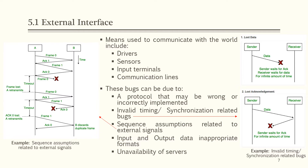External interfaces are the means used to communicate with the world and include drivers, sensors, input terminals, and communication lines. Bugs can be due to a wrong or incorrectly implemented protocol, or invalid timing and synchronization. In one scenario, a sender sends data but it is lost, so both sender and receiver wait indefinitely.